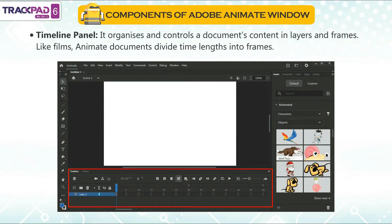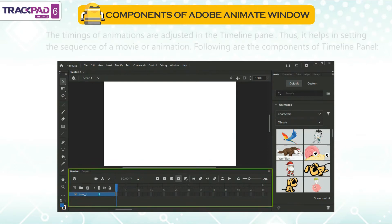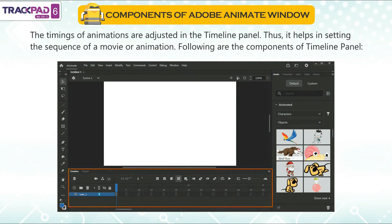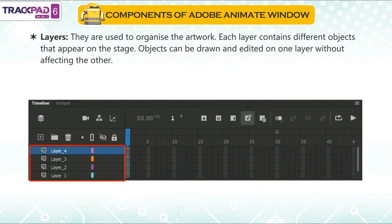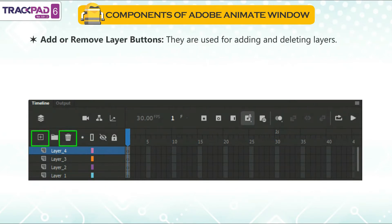Timeline panel: it organizes and controls a document's content in layers and frames. Like films, animate documents divide time lengths into frames. The timings of animations are adjusted in the timeline panel, helping to set the sequence of a movie or animation. Layers are used to organize the artwork. Each layer contains different objects that appear on the stage, and objects can be drawn and edited on one layer without affecting the other.